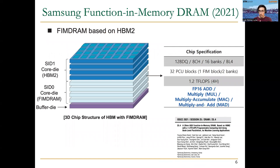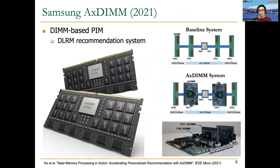Upmem is one real-world processing in memory architecture. In later lectures, we will talk about others that have been announced, such as Samsung HBM PIM or FIMDRAM — functioning-in-memory DRAM based on HBM2 memory. Samsung modified the design of some layers in the HBM stack to place near every two banks small compute units called PCUs. Another prototype from Samsung is called AX-DIMM, a DIMM-based solution where a small FPGA is placed on top of the DIMM to have direct access to the memory ranks.